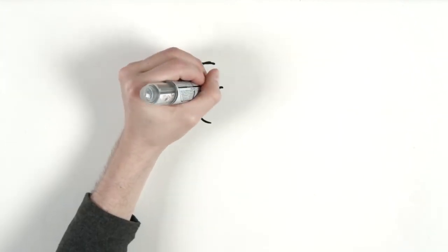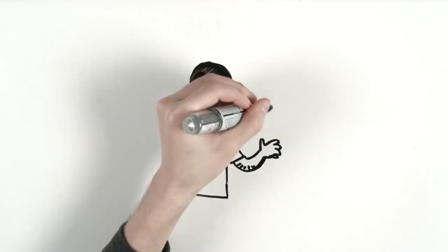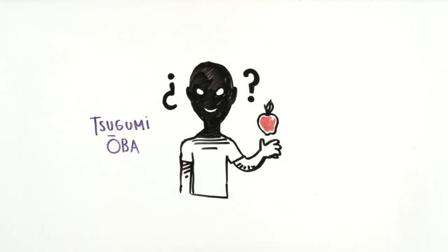It is said that Tsugumi Ohba is a pen name for a well-known Japanese manga writer. However, Ohba's real identity is a closely guarded secret and the author's real name is undisclosed.